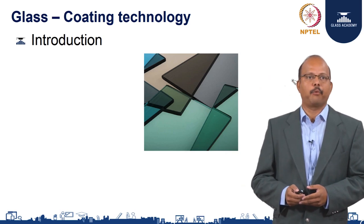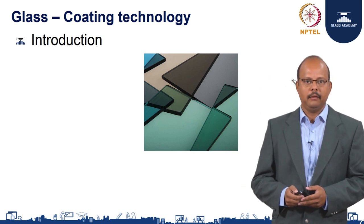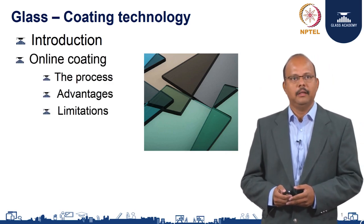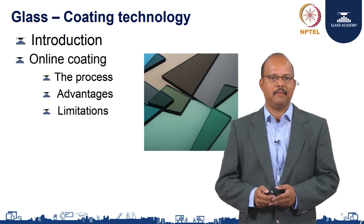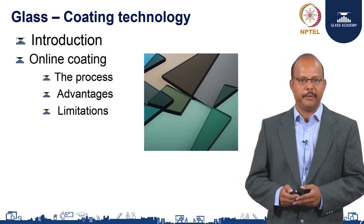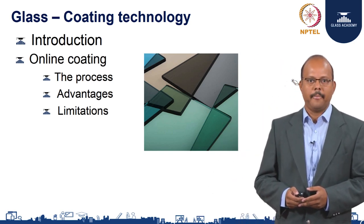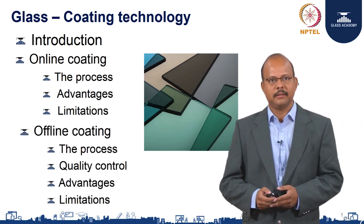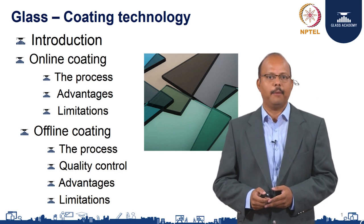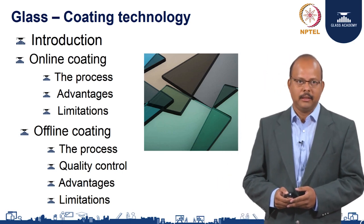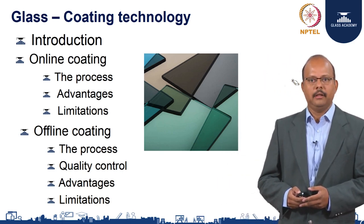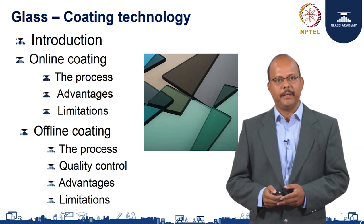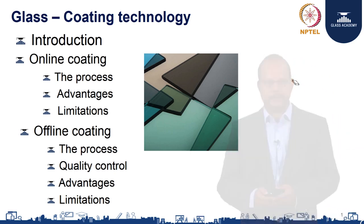We will cover the different processes of coating. First, the online coating — we will study about the process, its advantages and its limitations. Then the offline coating process — we will detail about the process, the quality control methodology, the advantages and the limitations of the process.